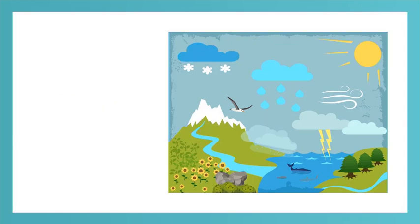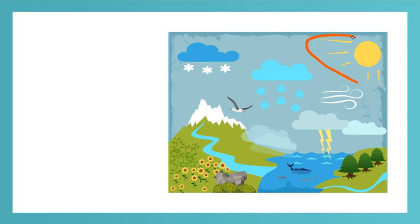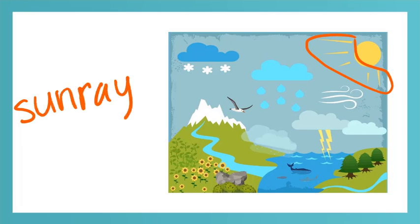What else do we see in the sky? Do you see the sun? We can find the sun right here. S-U-N. Sun. Do you see what's next to the sun? These are the sun rays. S-U-N-R-A-Y-S. Sun rays.